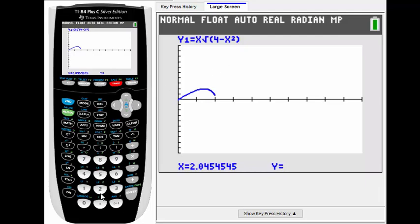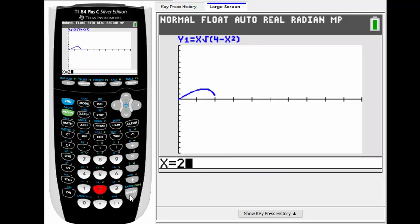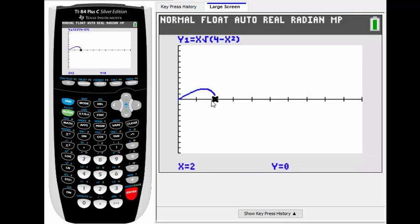But it looks like this function is defined for an x value of 2, since if I plug in x equals 2, you can see that y equals 0. So we're essentially interested in the area underneath this curve from x equals 0 to x equals 2.